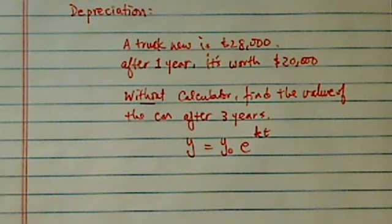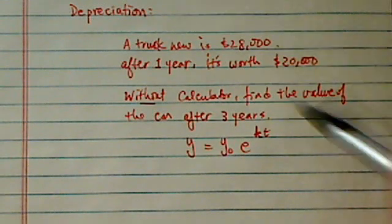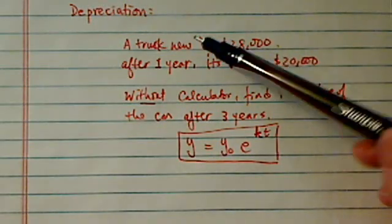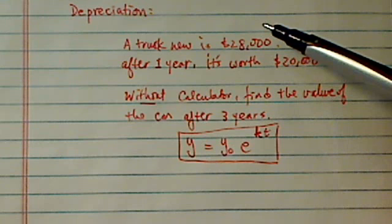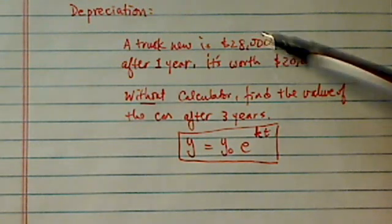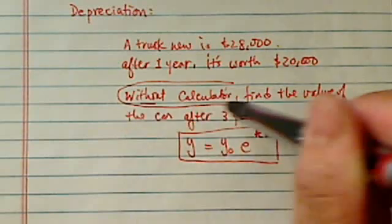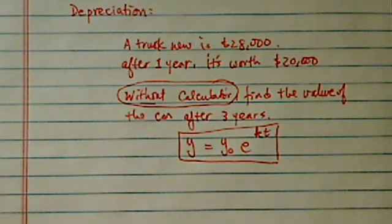Hey there. Thank you for watching this clip on depreciation. We're going to use this decay function here to describe the word problem. The truck new is $28,000. After a year, it's depreciated down to $20,000. Now here's the interesting part. It said without calculator, we were supposed to find the value of the car after three years.